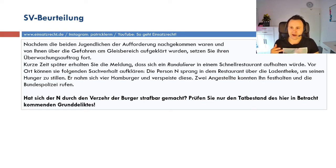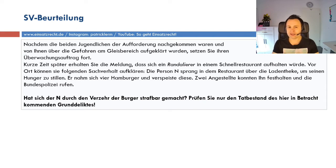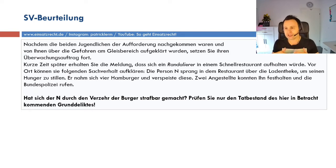Diese Fallfrage – hat er sich strafbar gemacht – zielt genau auf diese drei großen Punkte ab. Sie werden eingerahmt durch den einleitenden Obersatz, Zwischenergebnisse und das Endergebnis. Die Handlung kann man vor dem Tatbestand problematisieren, wird aber in der Regel vorausgesetzt, es sei denn, es liegen wirklich Probleme vor. Dann wird es nicht das TAS-Schema, sondern das HTAS-Schema.